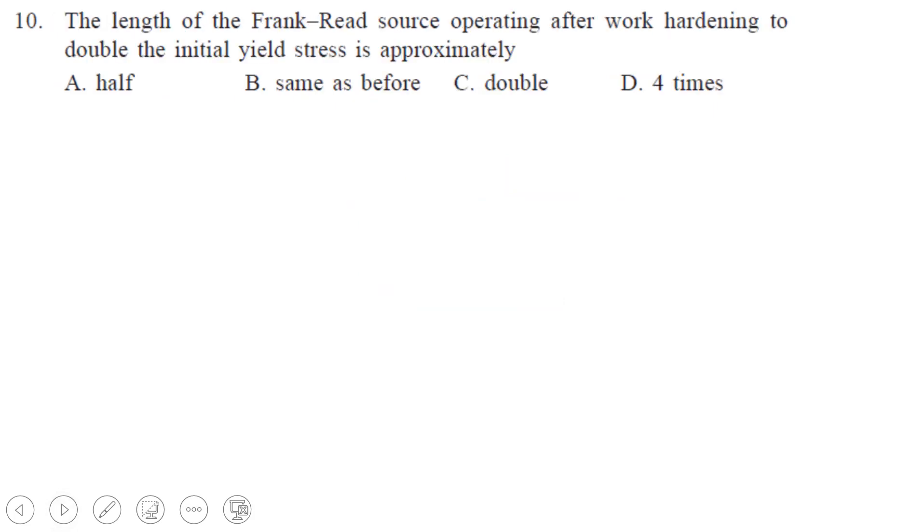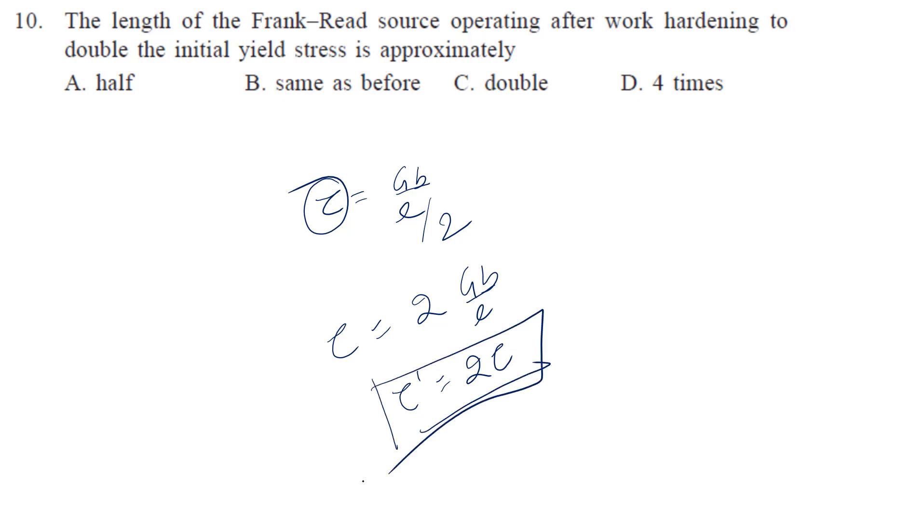Now next question. The length of the Frank-Read source operating after work hardening to double the initial yield stress is approximately. So this has to be doubled. So tau is equal to Gb by l. Suppose this tau we need to double. So we will have to decrease this length by 2. So then it can be double. So it will be tau 2 Gb by l. So it will be tau dash equal to 2 times tau.